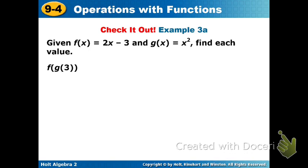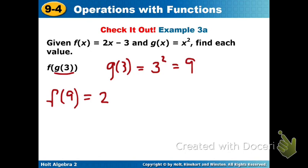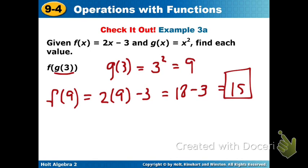Alright, we have another one. And what I would like for you to do, if you are not in class, I want you to pause the video, work this one out, and then turn it back on and check your work. So we're going to start with g of 3. So g of 3 would be 3 squared or 9. And now we're going to put that into the f. So f of 9 would be 2 times 9 minus 3. 2 times 9 is 18. And 18 minus 3 would be 15. And here's your final answer. I hope you got it.